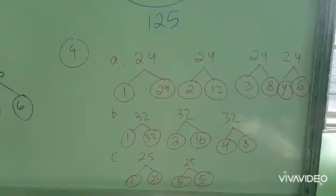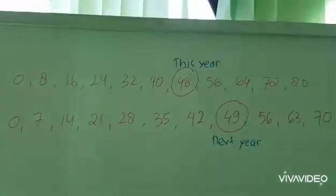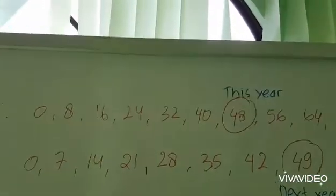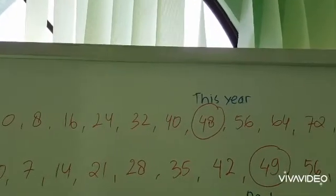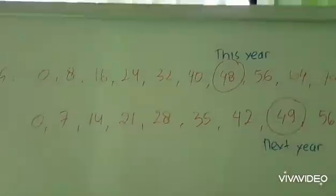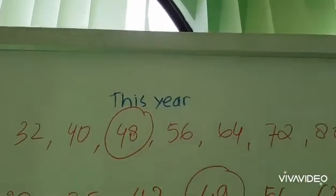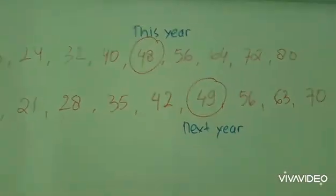Now let's find out number 5. These are the answers for number 5. First of all, jadi pertama-tama kalian cari dulu multiple dari 8, kelipatan 8, after that kelipatan 7. Jadi jawabannya adalah my age this year is 48 and next year is 49.